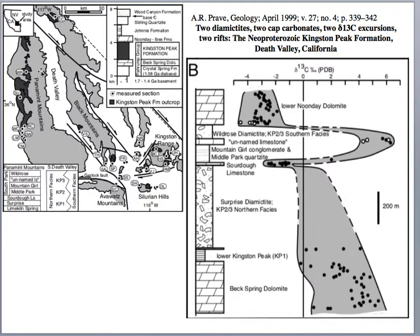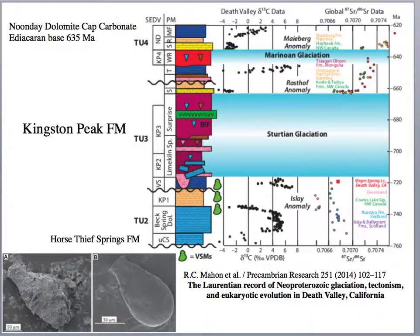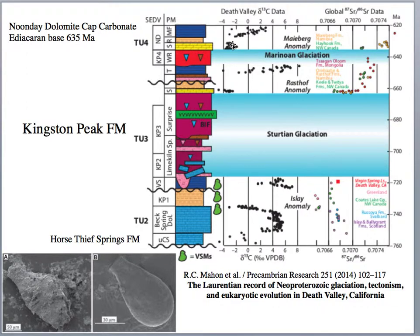These are rocks in the Death Valley region — the Panamint Ranges, the Kingston Ranges, and Salern Hills down in the Death Valley region. Here's another look at some of these glaciations: the Sturtian Glaciation and the Marinoan Glaciation. This is showing that drop in the carbon-13 isotopes.